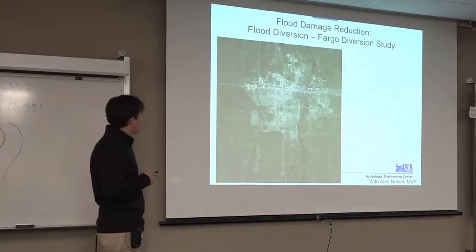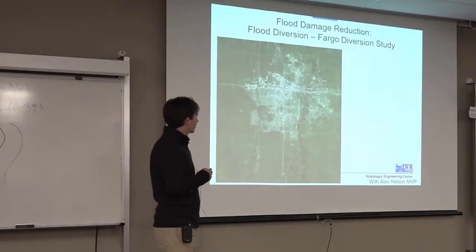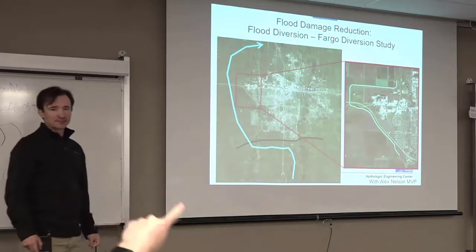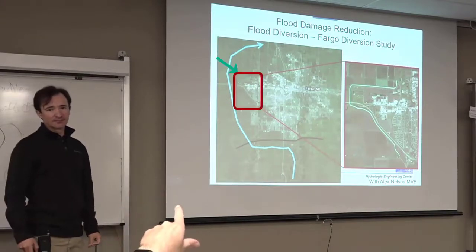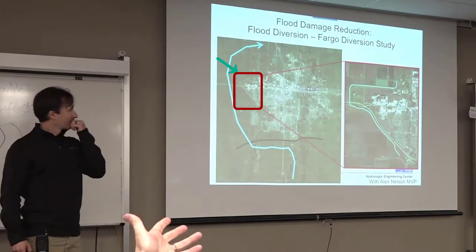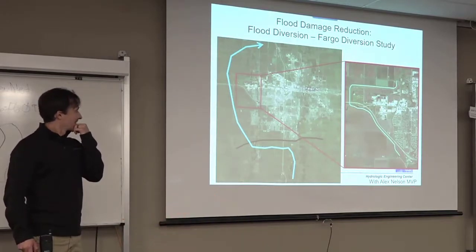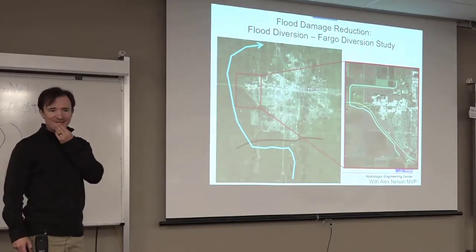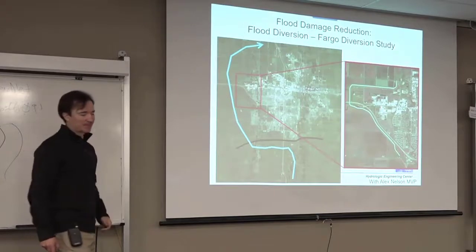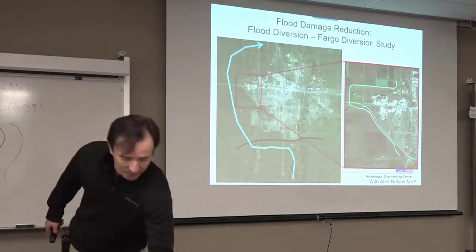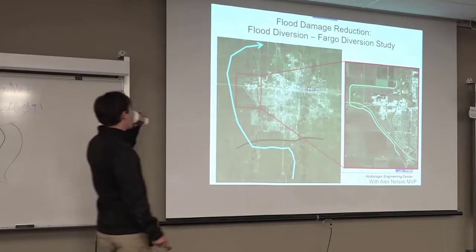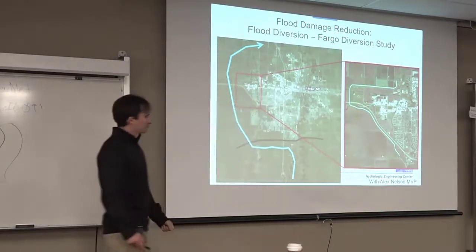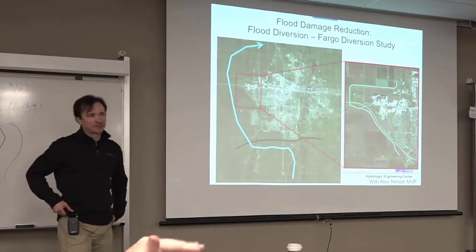So this was a flood damage reduction project that is the Fargo Diversion Study. Basically, this is one of the biggest projects in the Corps. They're looking to build this diversion around. But if you look in this little suburb up here, there's essentially a 5-to-1 scale model of it that has eroded in the positive. So when Alex set out to do this in 1D, how do you calibrate something that's unprecedented? Well, you could actually calibrate to this 1-to-5 scale model and so that's what we're looking at here is Alex's model of this actual one that did erode in the channel and deposit in the other things.